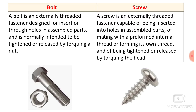A screw is an externally threaded fastener capable of being inserted into holes in assembled parts, or mating with a preformed internal thread or forming its own thread, and of being tightened or released by torquing the head. So a screw is also a type of fastener — it can be inserted into a hole or produce its own hole with the help of its external threads. It is clamped by giving torque to its head.